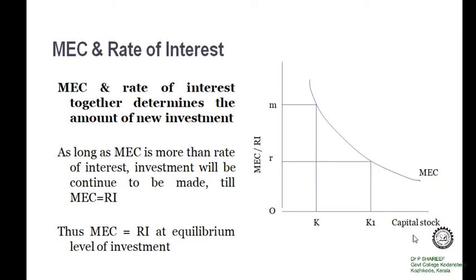The capital stock is represented on the horizontal axis and the vertical axis measures MEC and rate of interest. At point K, the rate of interest is OR, which is generally stable in the short term, while the marginal efficiency of capital is OM, which is higher than the rate of interest. Therefore, investment is profitable and investors continue to invest more.